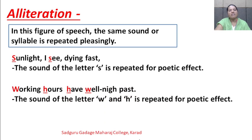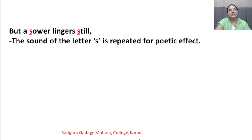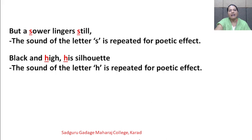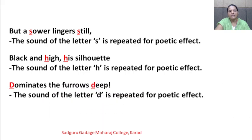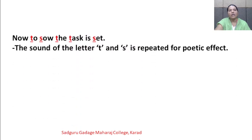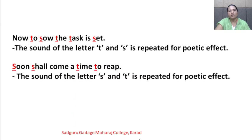Next example: 'Working hours have well-nigh past' — the sounds of W and H are repeated for poetic effect. Next: 'But a sower lingers still' — the sound of S is repeated for poetic effect. Next: 'Black and high is a silhouette' — the sound of H is repeated for poetic effect. Next: 'Dominates the furrows deep' — the sound of D is repeated for poetic effect. Next: 'Now to sow the task is set' — the sounds of S and T are repeated for poetic effect. 'Soon shall come a time to reap' — the sounds of S and T are repeated for poetic effect.